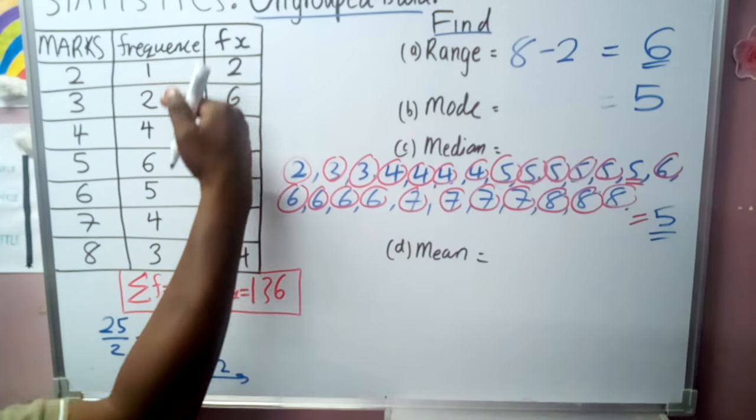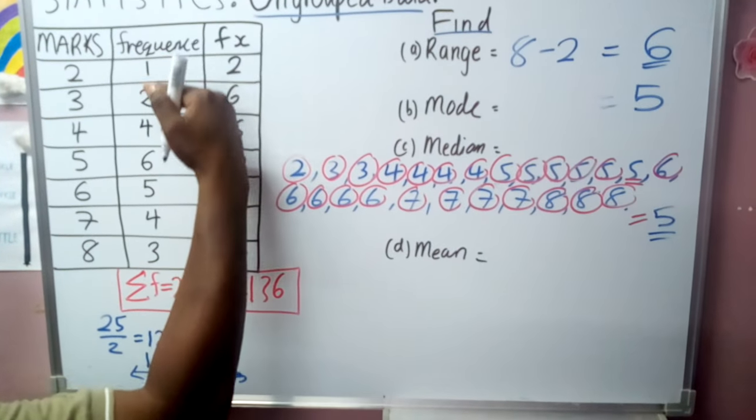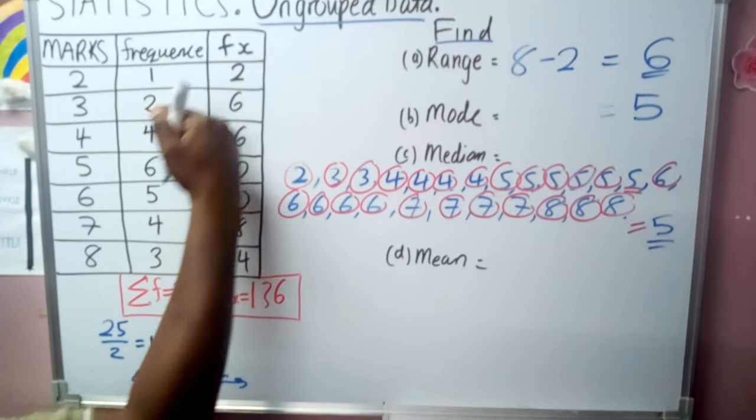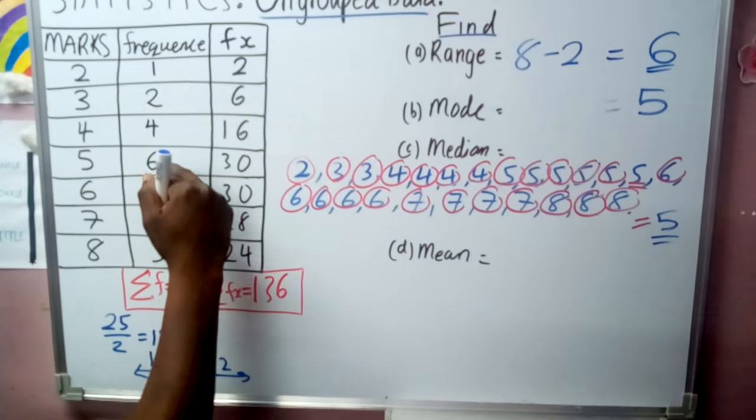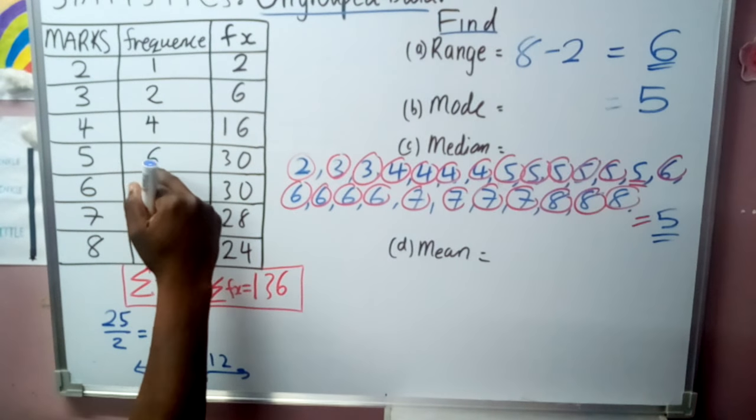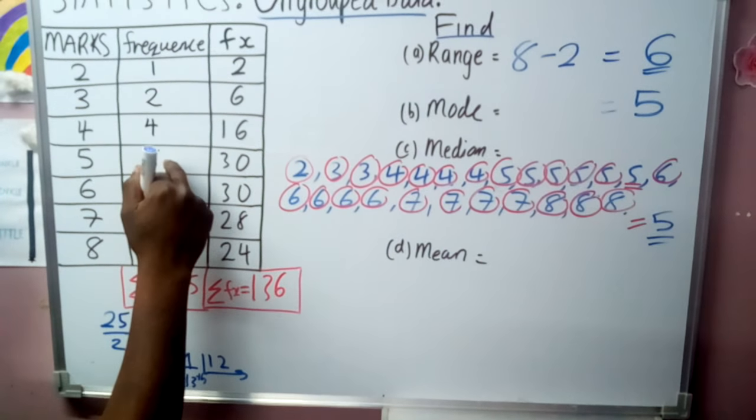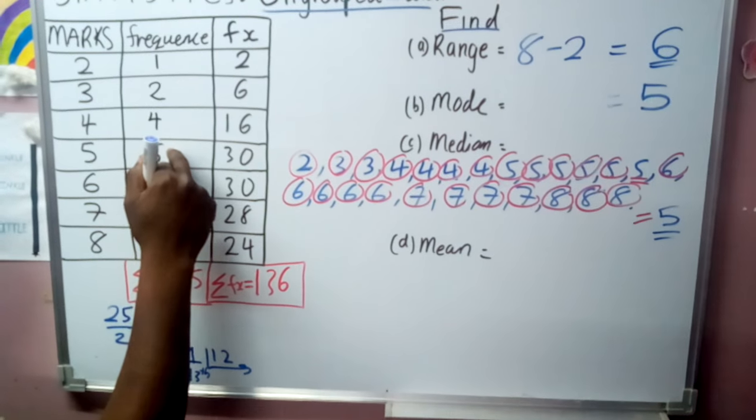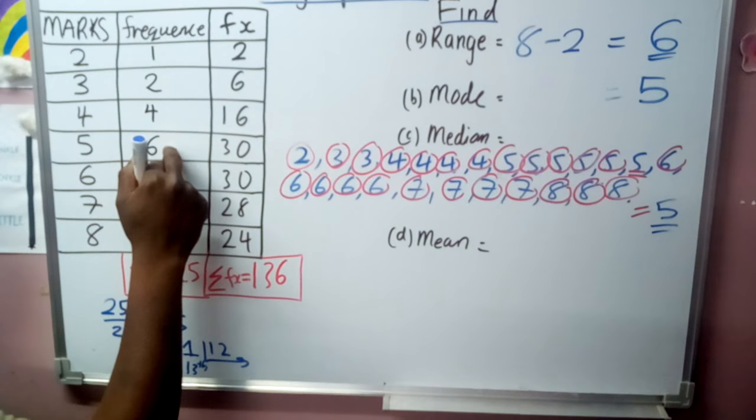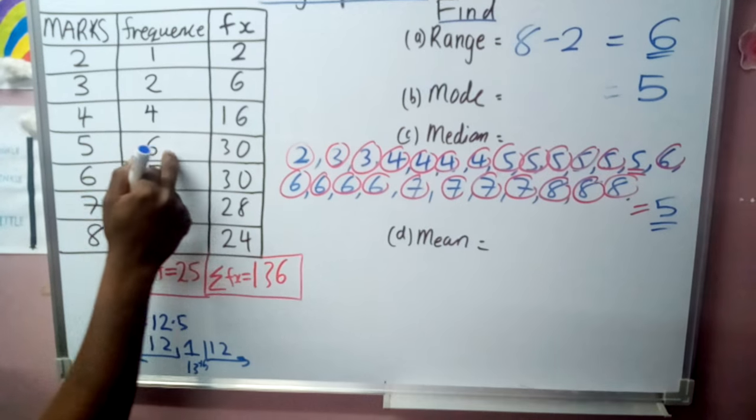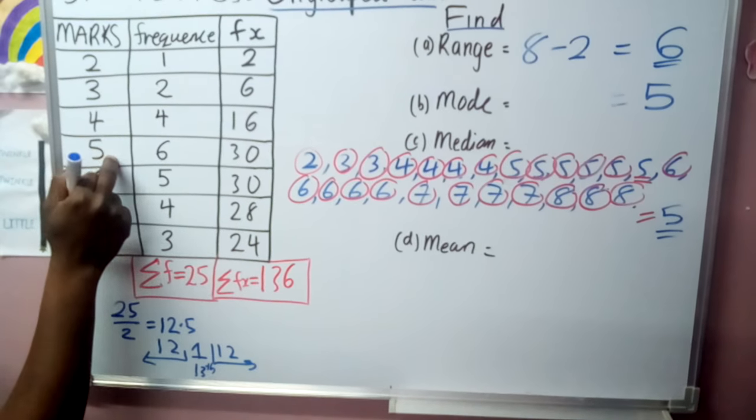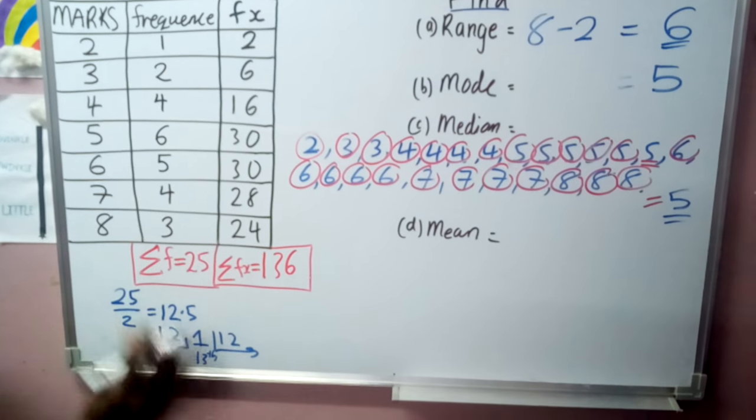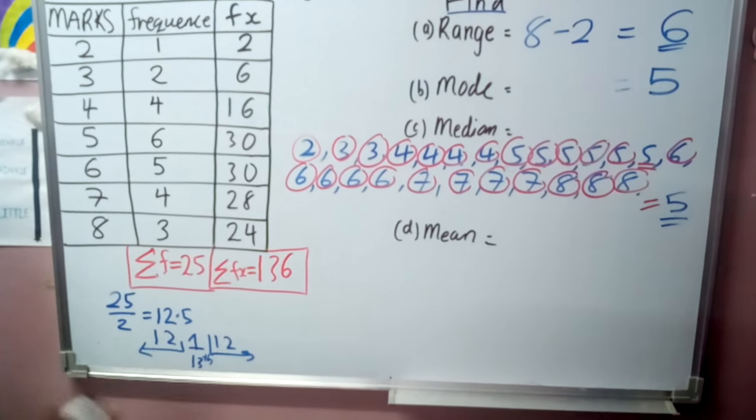So we go back to our frequencies. We keep on adding. 1 plus 2 is 3, plus 4 is 7, 7 plus 6 is 13. Now, since the total is 13 inside here, it means it consists of our median. Hence, our median is 5. That's our second shortcut method.